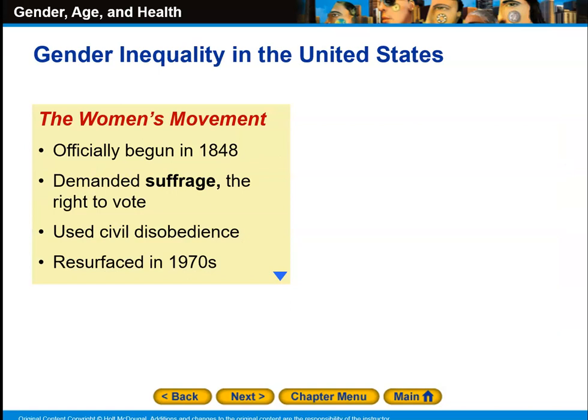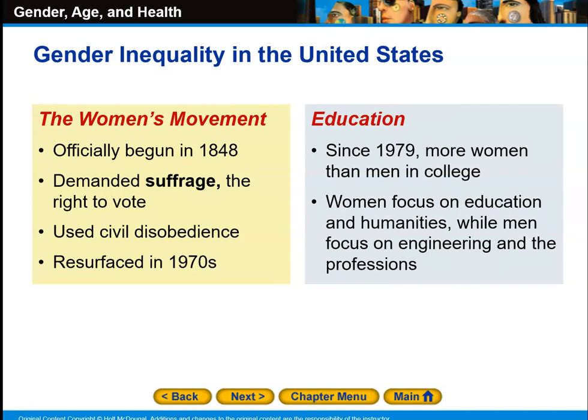Gender inequality in the United States — the Women's Movement. Officially, it began in 1848 when women demanded suffrage, which is the right to vote. They used civil disobedience. It eventually went by the wayside during the period where they tried to abolish slavery, then resurfaced after the Civil War to get the right to vote. It kind of went down after women got the right to vote, and resurfaced in the 1970s as women started to become more prominent in the workforce.